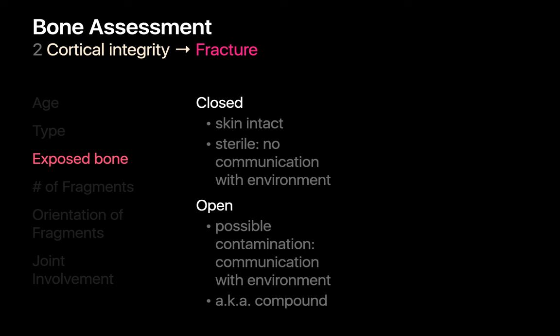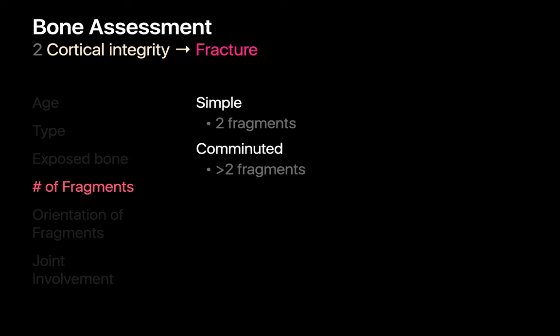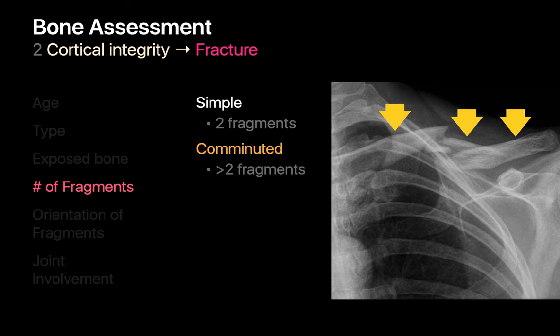Share if there is any evidence of direct bone exposure to the environment by describing the fracture as closed, if no fracture fragment has breached the skin and the fracture site is therefore sterile, or open, if there is evidence a fracture fragment has breached the skin surface, meaning that the fracture site may no longer be sterile. Describe the number of fracture fragments. Simple fractures result in only two fragments, one on each side of the fracture plane. If more than two fragments are present, the fracture is comminuted.